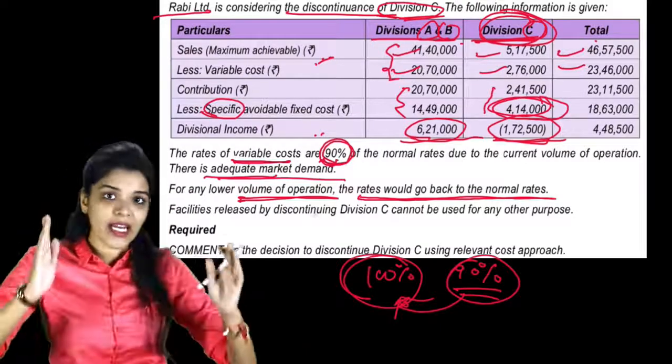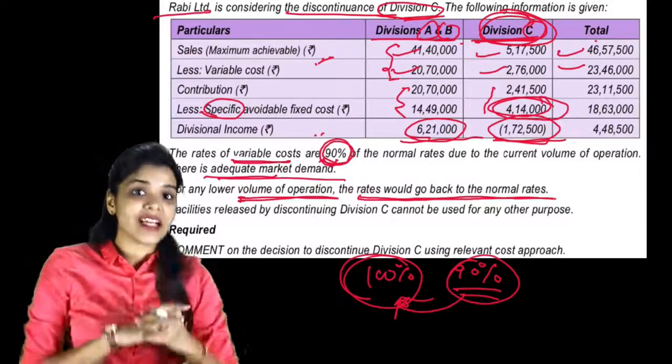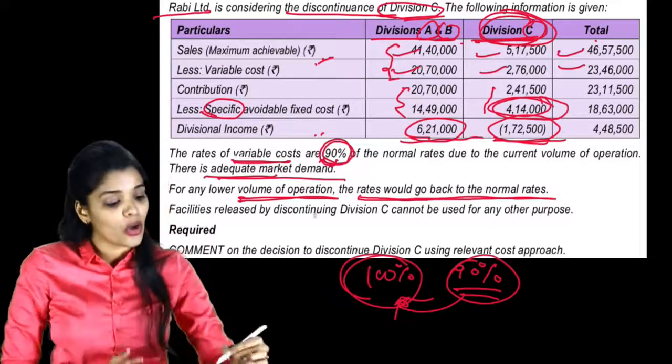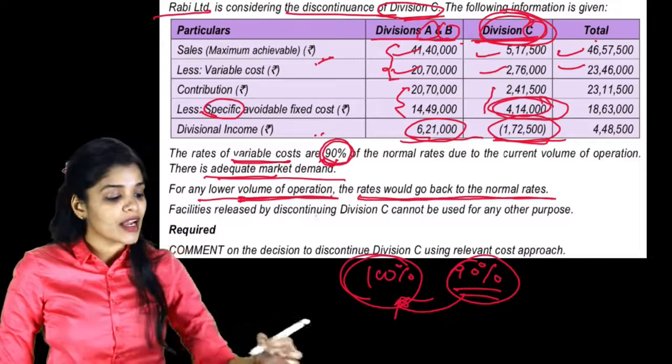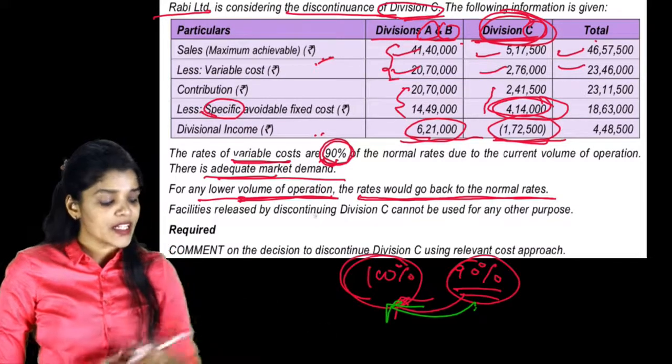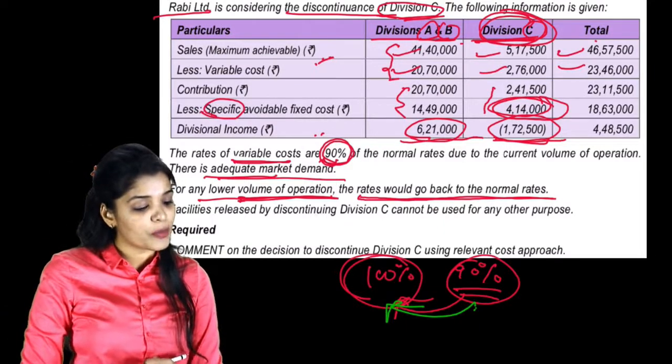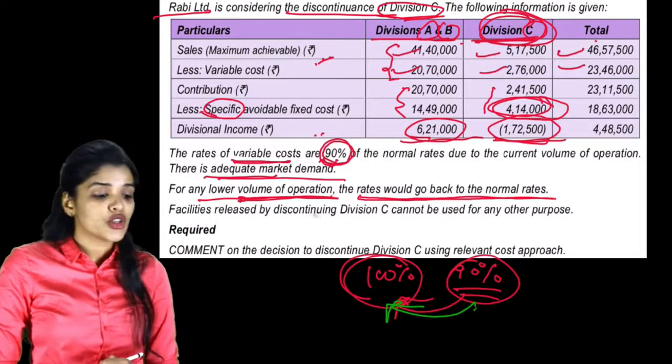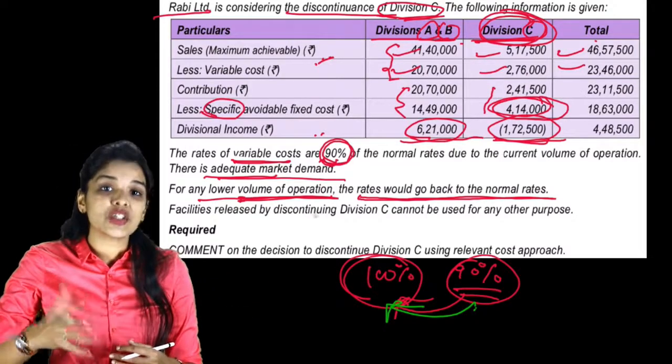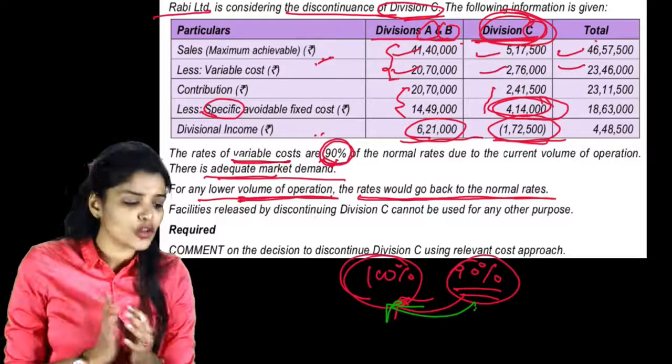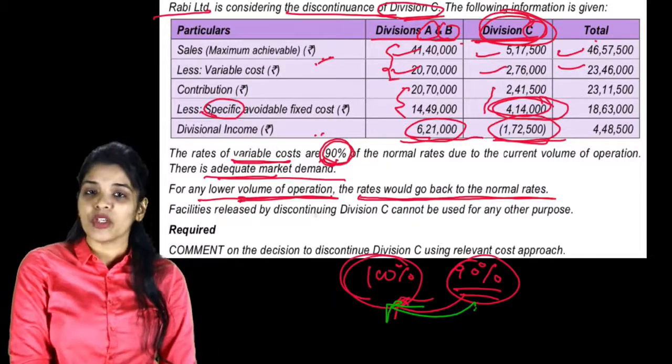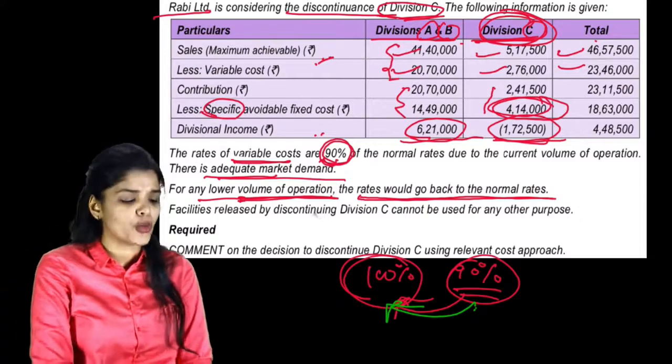Now there is adequate market, 100% variable cost is not being incurred, 90% is being incurred. If Division C discontinues, lower volume of operation will occur, and variable cost will go back to 100%. Facilities released by discontinuing Division C cannot be used for any other purpose - whatever facilities are being released, they cannot be used for any other purpose.